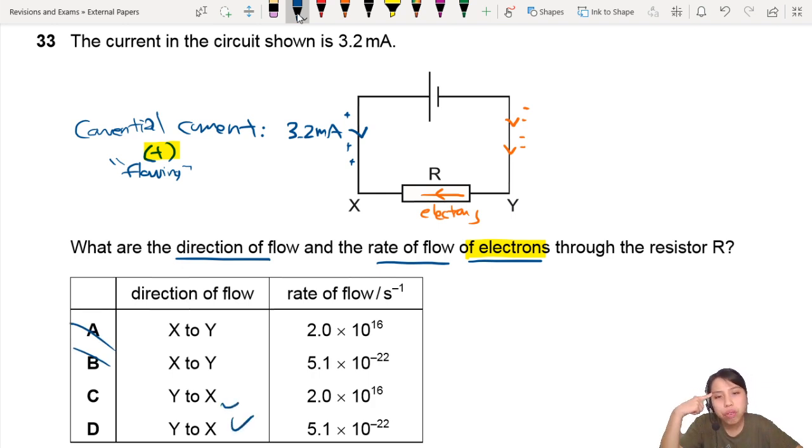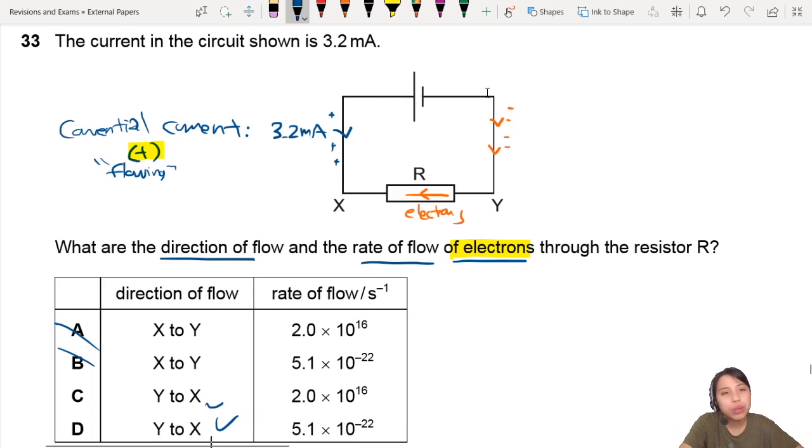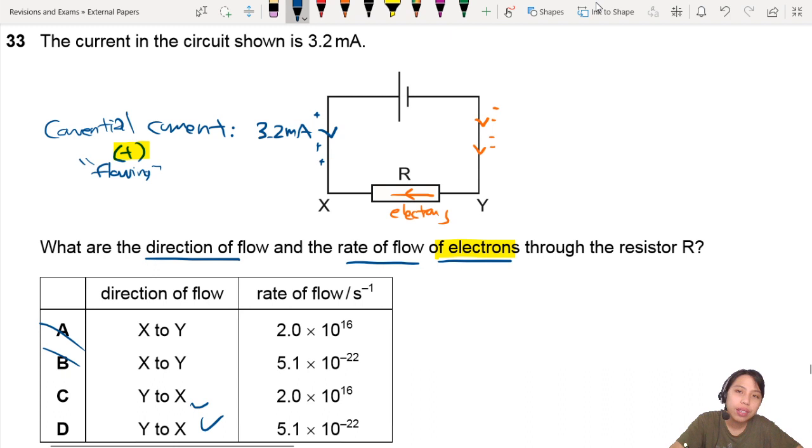Rate of flow of electrons per second. When you see current and you see rate, you should think of a definition of current. So I is dQ dt. So rate of flow of charge per unit time, or you could simplify it, I guess, to Q over T. It's a simplified version of it.